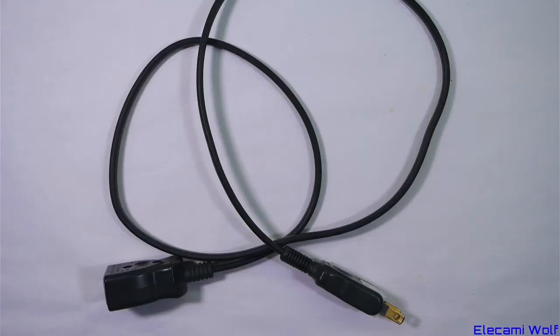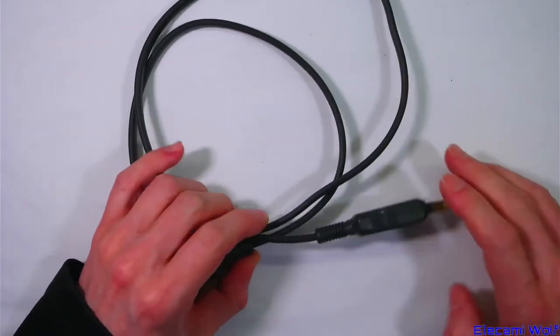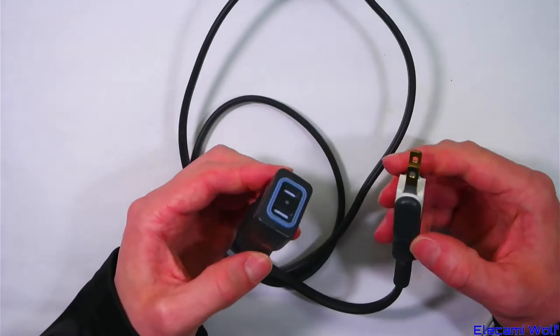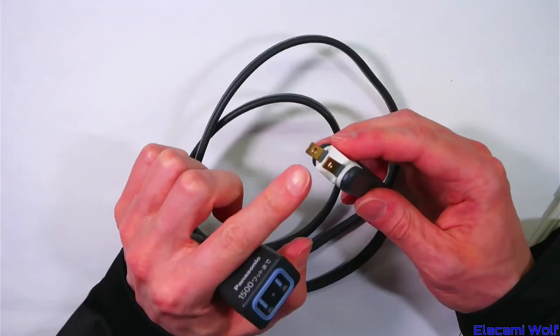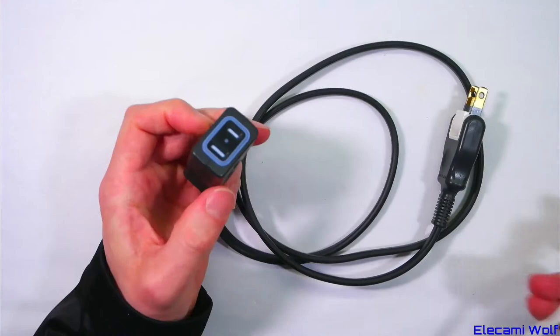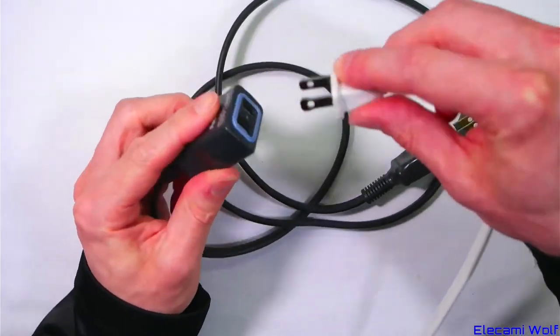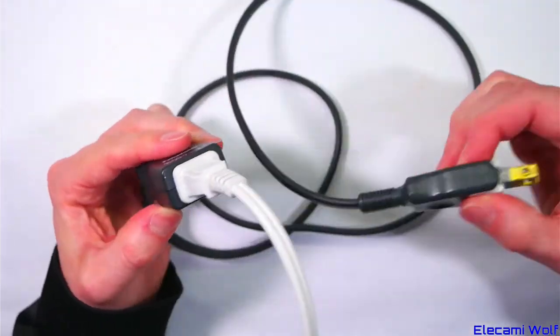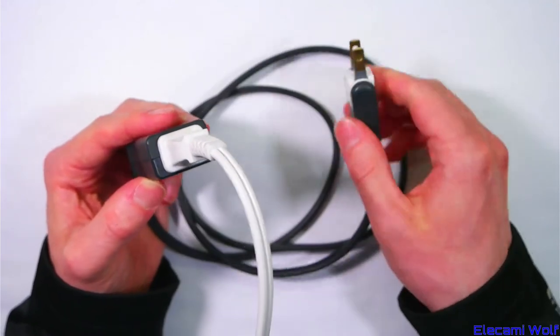Extension cords like this can defeat the polarization. They have a non-polarized plug on that end and a polarized socket. So you can take a polarized plug and connect it there. And then connect this end around whichever way you like.